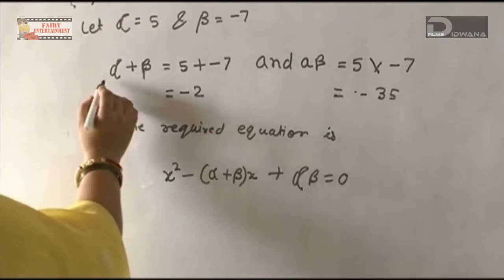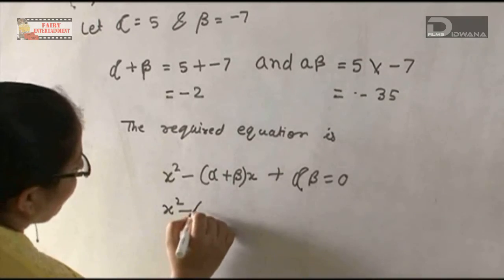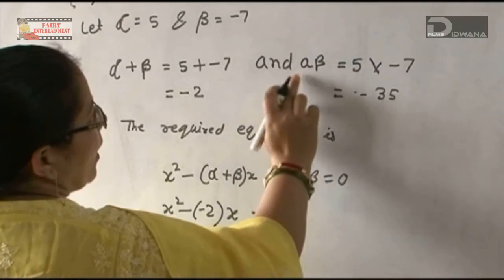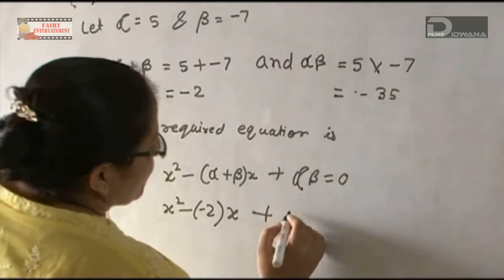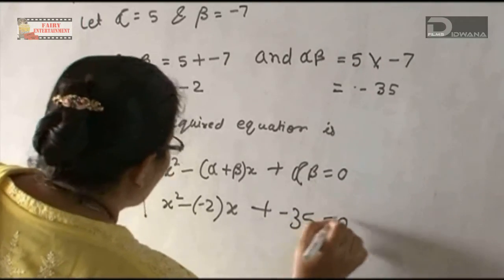The value of α + β is -2. So we write x² - (-2)x + (-35) = 0.